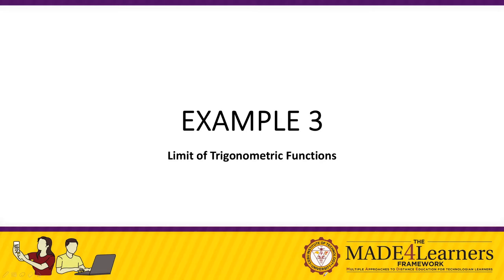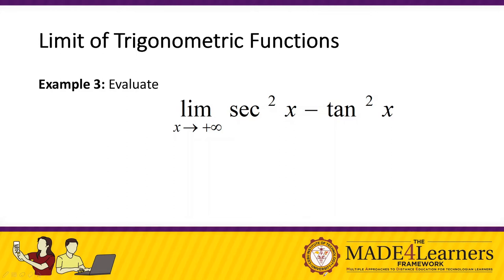For example number 3, we have the limit of sec²x minus tan²x as x approaches positive infinity. Now we have limits at infinity. If we try to substitute positive infinity here, we will have sec²(∞) minus tan²(∞). But that will not make sense — we don't have a concept of sec(infinity) or tan(infinity). So what do we do now?